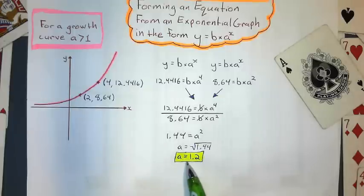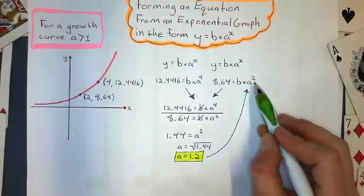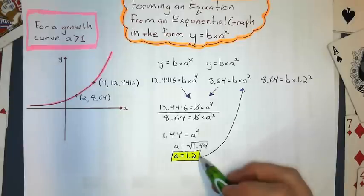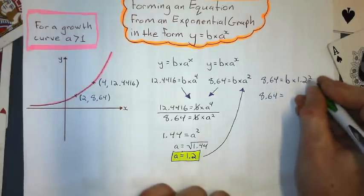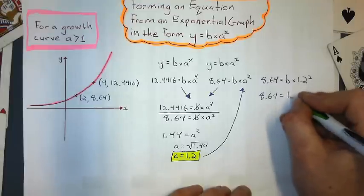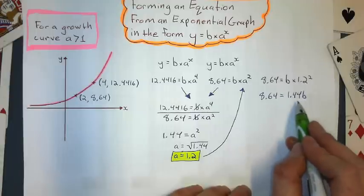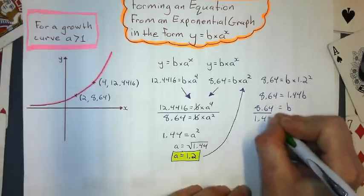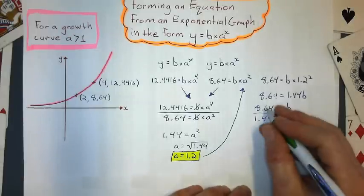So now what I do is I take that a and I substitute it back into either equation to solve for b. I'll substitute it back into this equation just because it's a lower power, but it doesn't matter. That's what I get when I substitute it back in. 8.64 equals 1.2 squared. Well, that's 1.44. Finally, to solve for b, I just divide by the coefficient, which is 1.44. And that value gives me what the y-intercept would be. And this gives me 6.